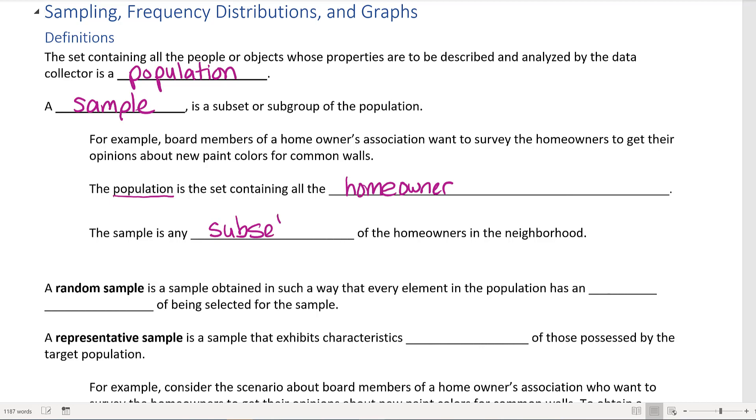A sample would be any subset of the homeowners in the neighborhood. So if there's 250 homeowners and you can't ask every single one, you could randomly pick maybe 25 and ask them. That group of 25 would be the subset or sample of the population.